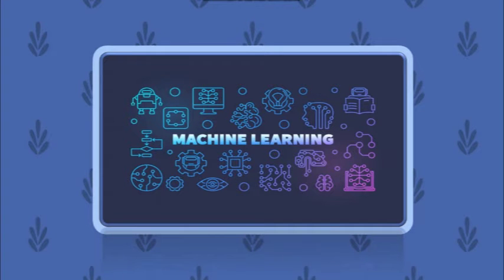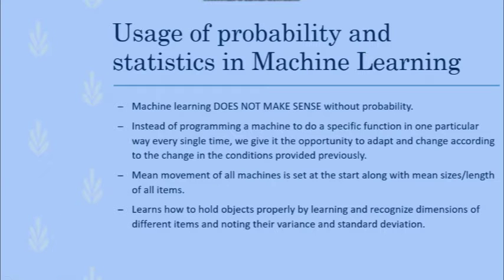So, the important topic: what is the importance of the above two topics in machine learning? Although it sounds like something out of a sci-fi movie, it's actually a huge part of the world's advancement towards the future. Machine learning really does not make sense without the presence of probability.